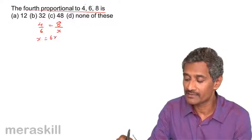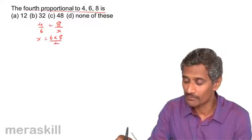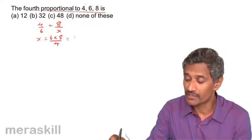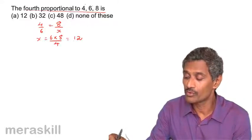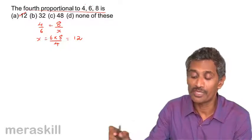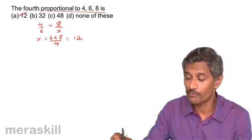So, X is going to be 6 into 8 upon 4 that is 48 by 4, 12. So, the fourth proportional is going to be 12.